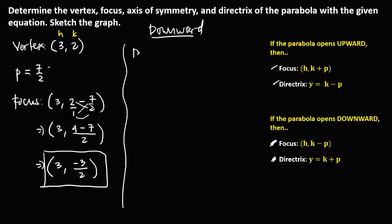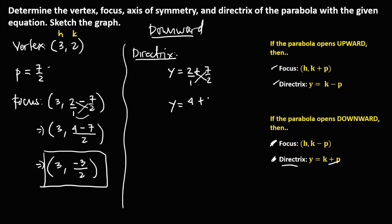For the directrix, since the parabola opens downward, the formula is y equals k plus p. So y equals 2 plus 7/2. Using cross multiplication: 4 over 2 plus 7 over 2 equals 11 over 2. The equation of the directrix is y equals 11 over 2.